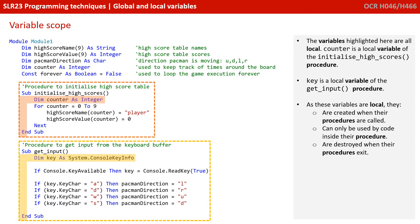As these variables are local, they're created when the procedures are called, can only be used by code inside their procedure, and they're destroyed when the procedures exit.